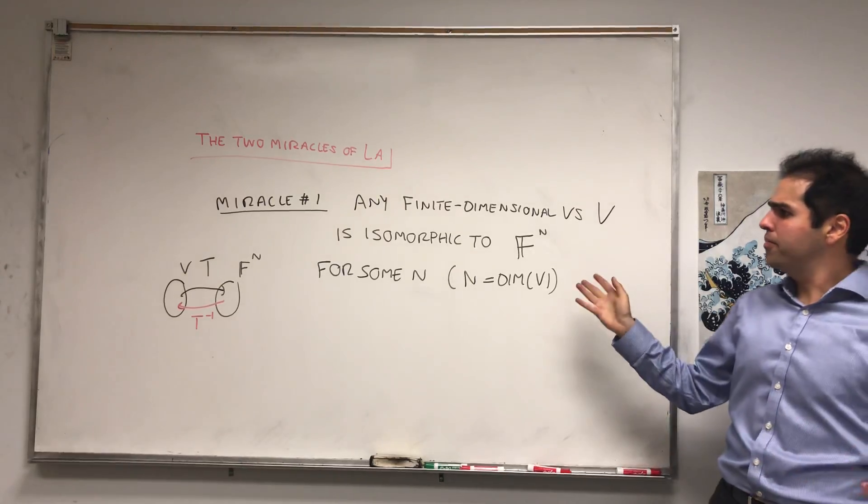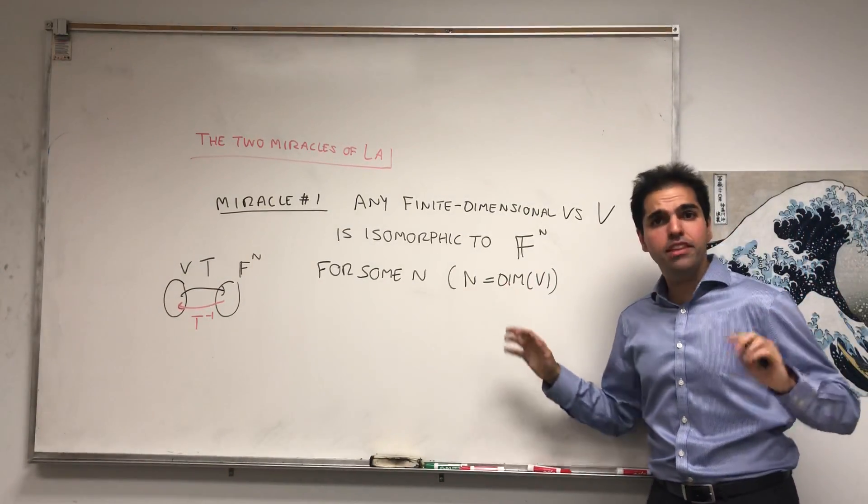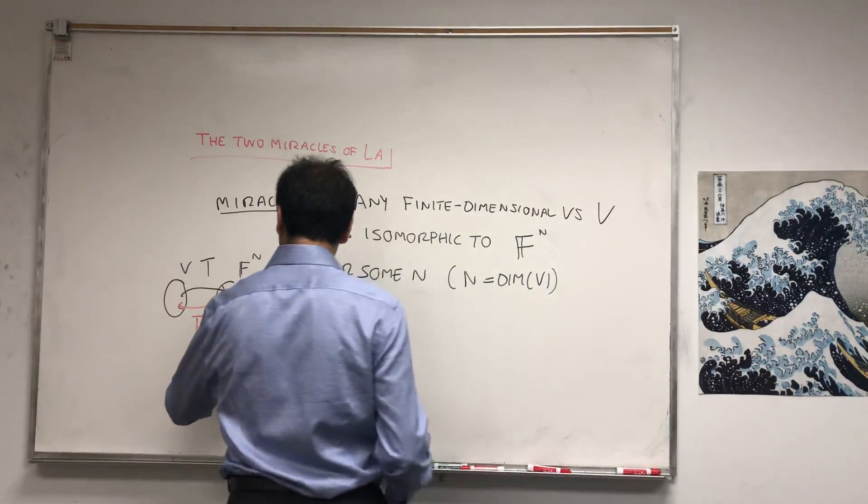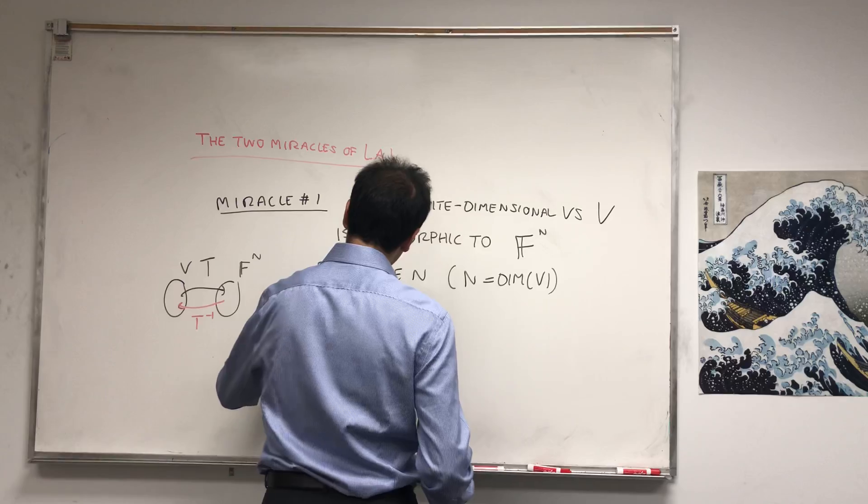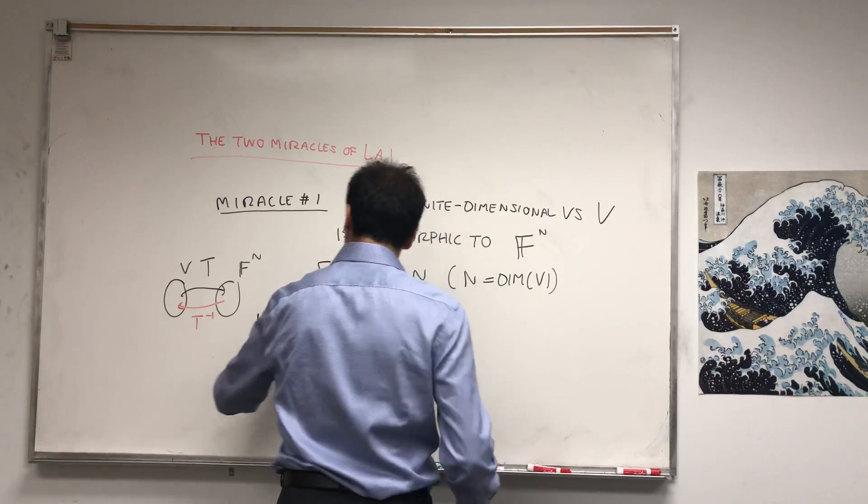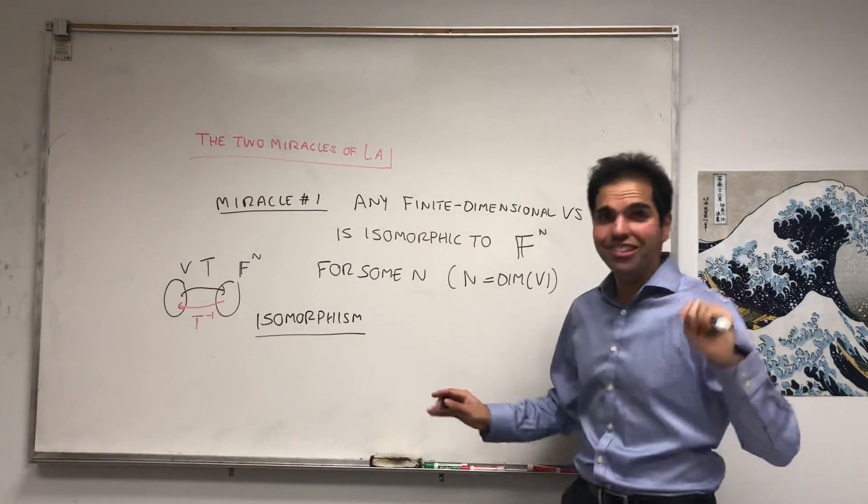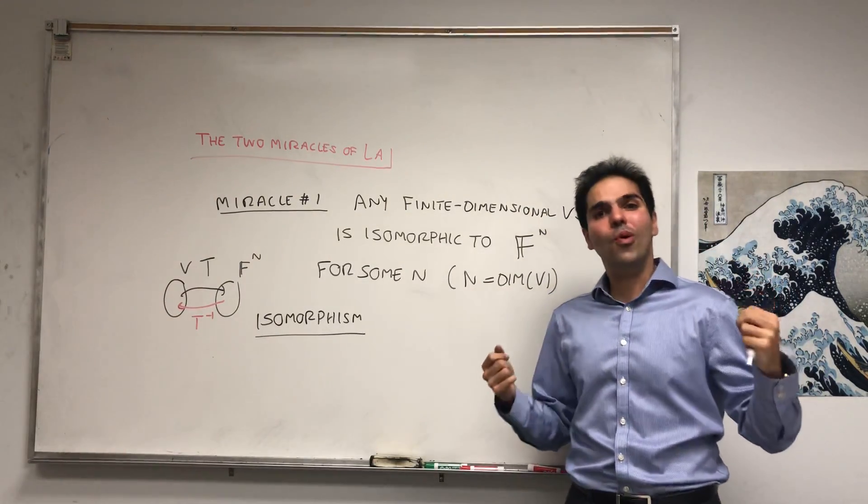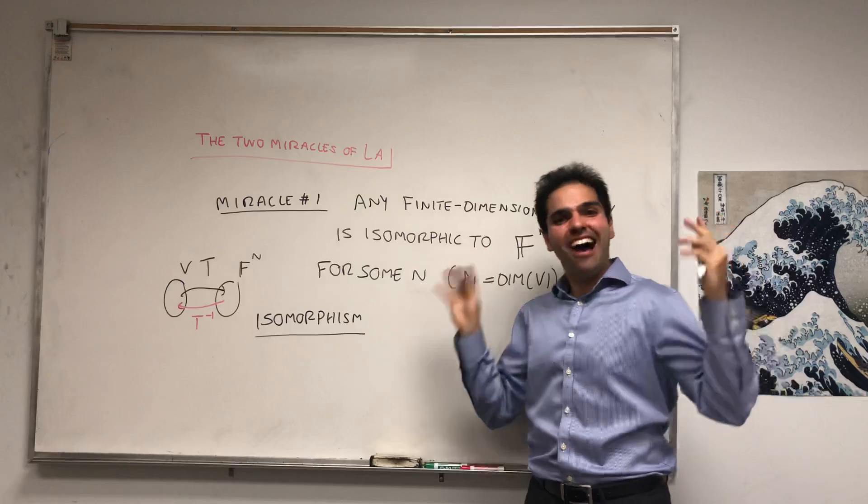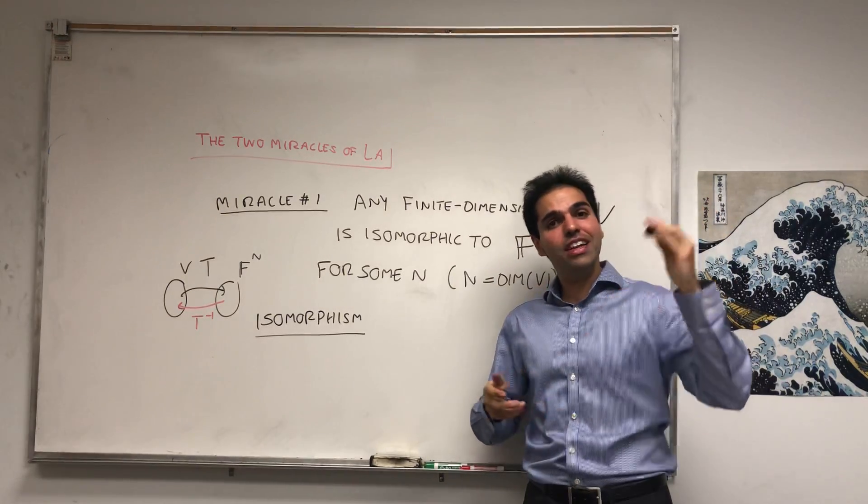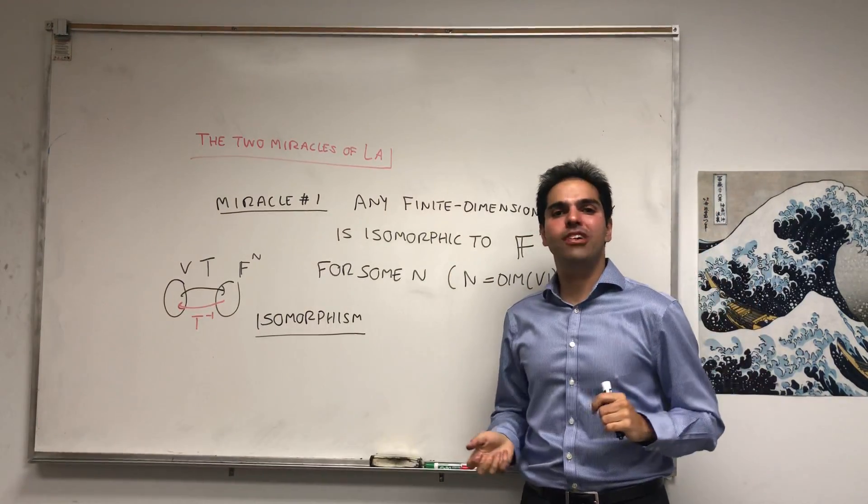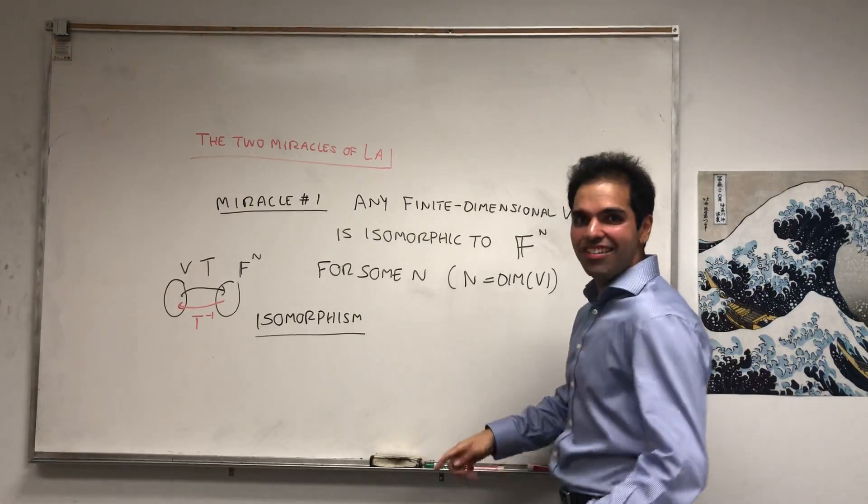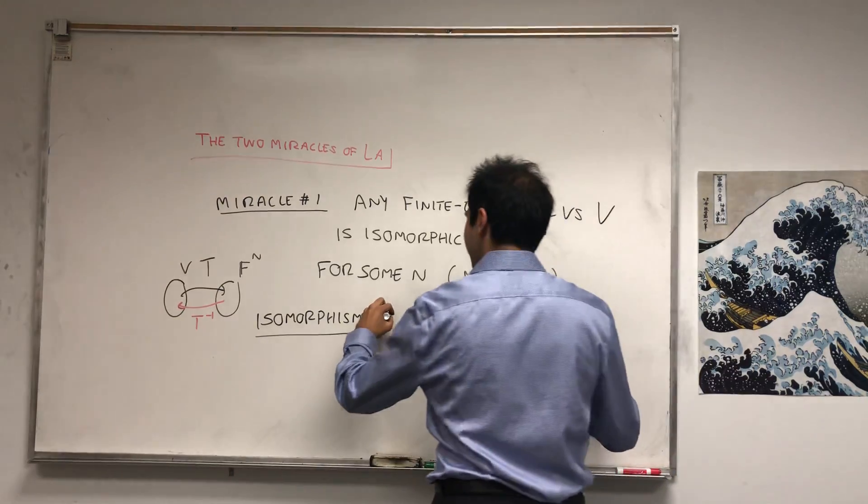And I won't really prove it, but let me tell you what the isomorphism is. It's actually nothing new, something you've seen before. How can you attach a concrete coordinate? How can you attach a concrete list of numbers to an abstract vector? Well, just use coordinates.